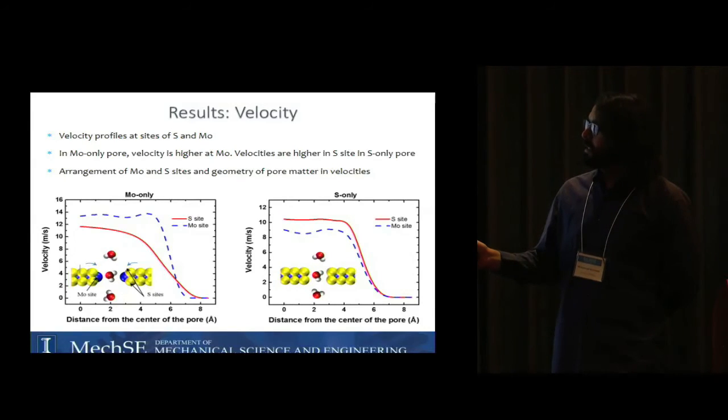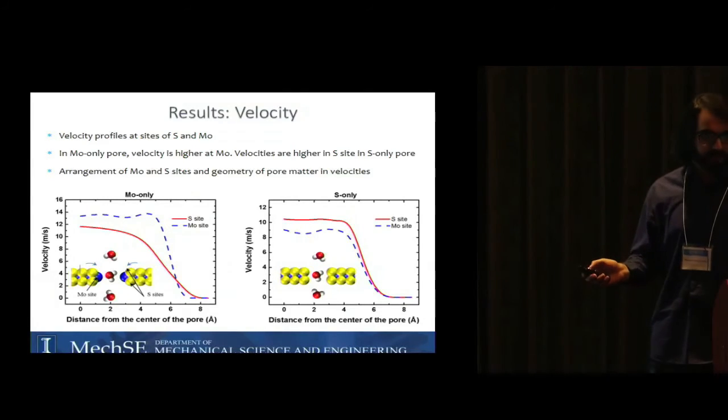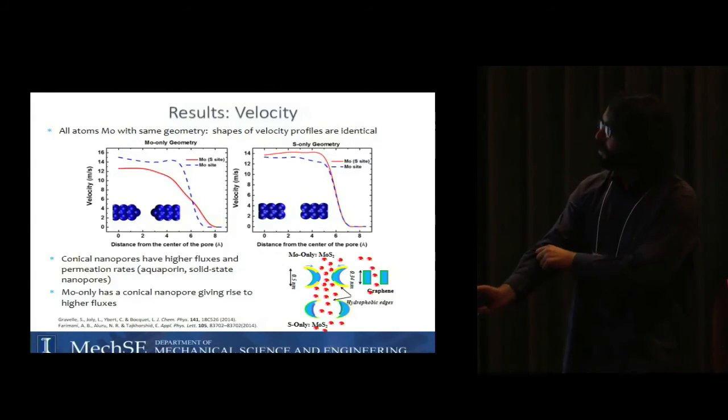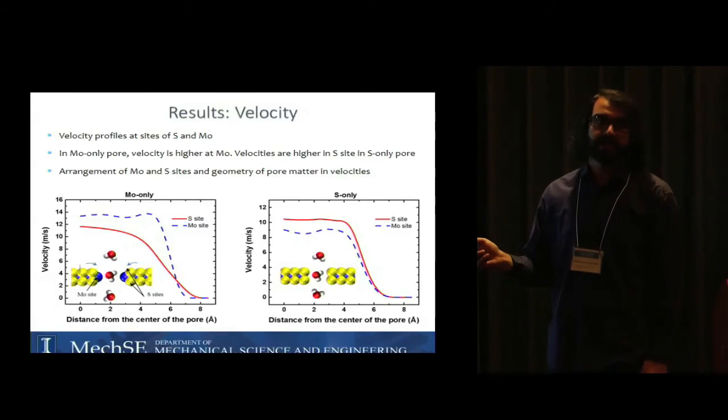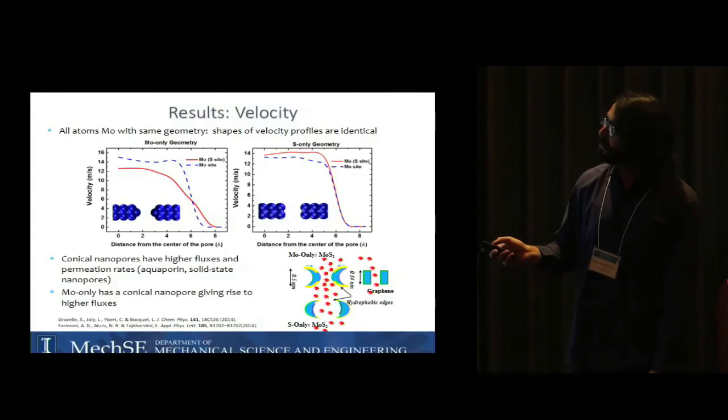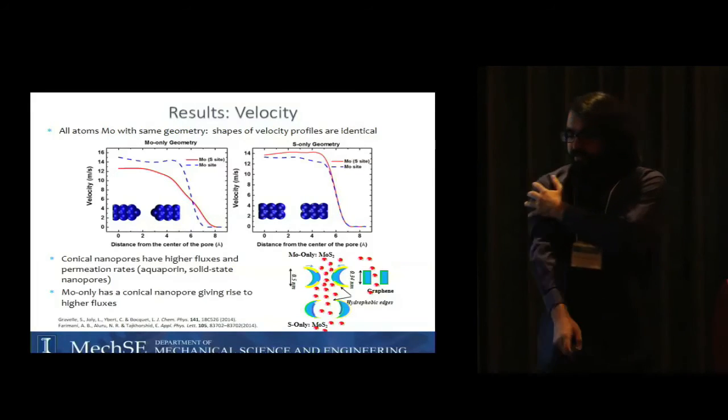at the site of molybdenum atoms and sulfur atoms. For Mo only we have higher velocity at the site of Mo, but that's the opposite for the other case. To exclude the effect of chemistry, we fictitiously replaced sulfur atoms with molybdenum atoms so we have these fictitious all molybdenum membranes but we preserve the geometry of Mo only and S only pore. As you can see, the velocity profiles are almost identical with what we got in the previous slide.